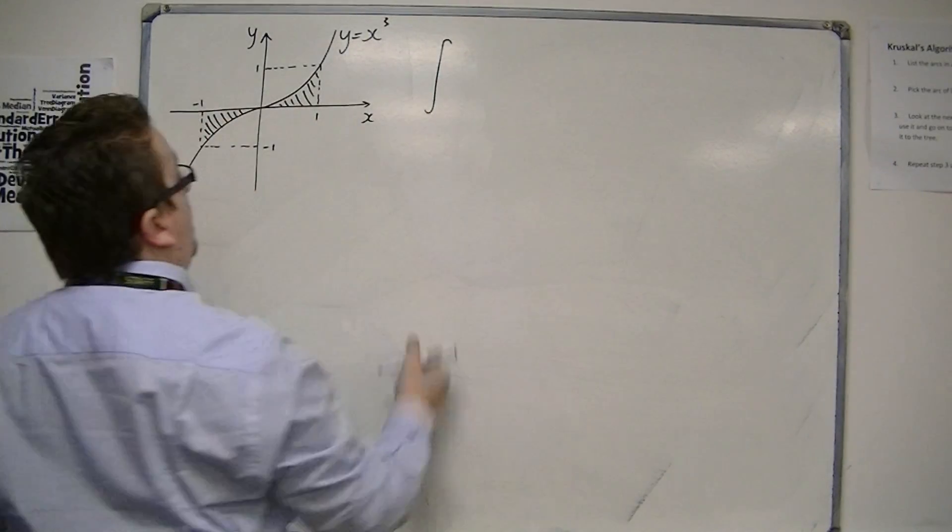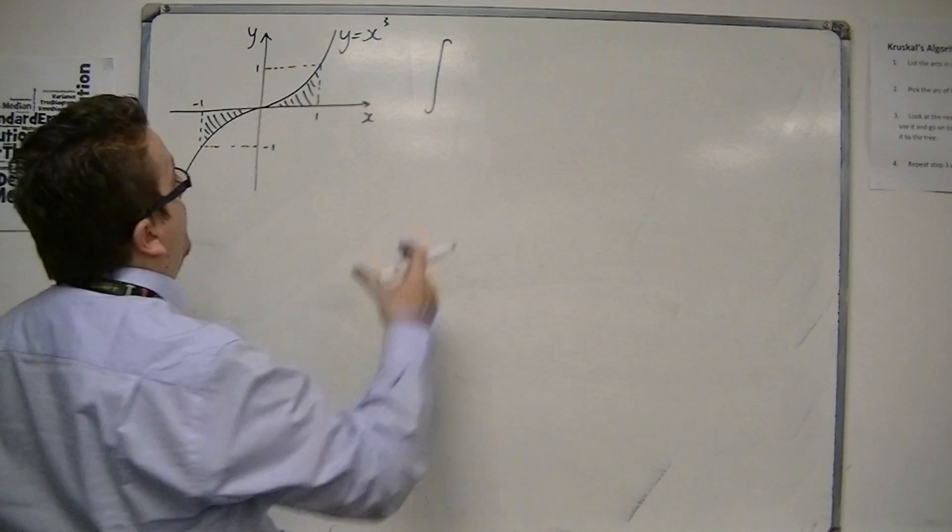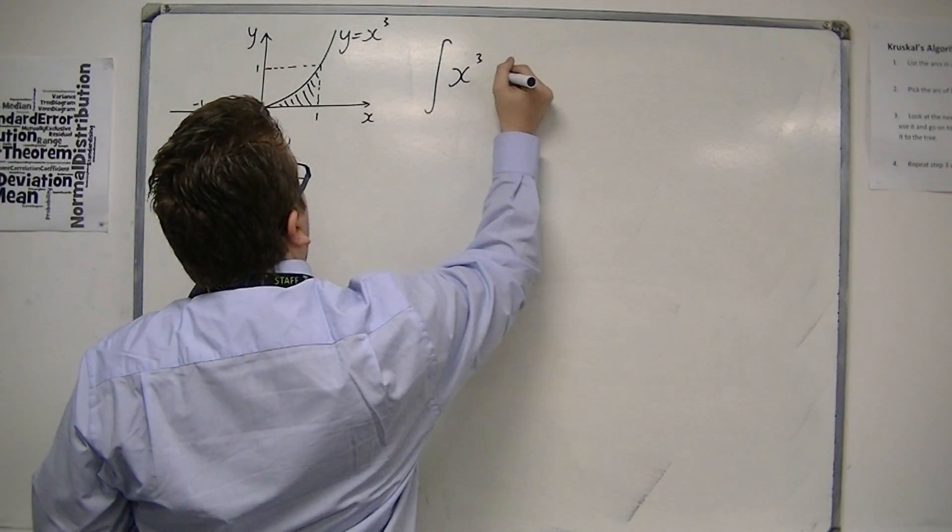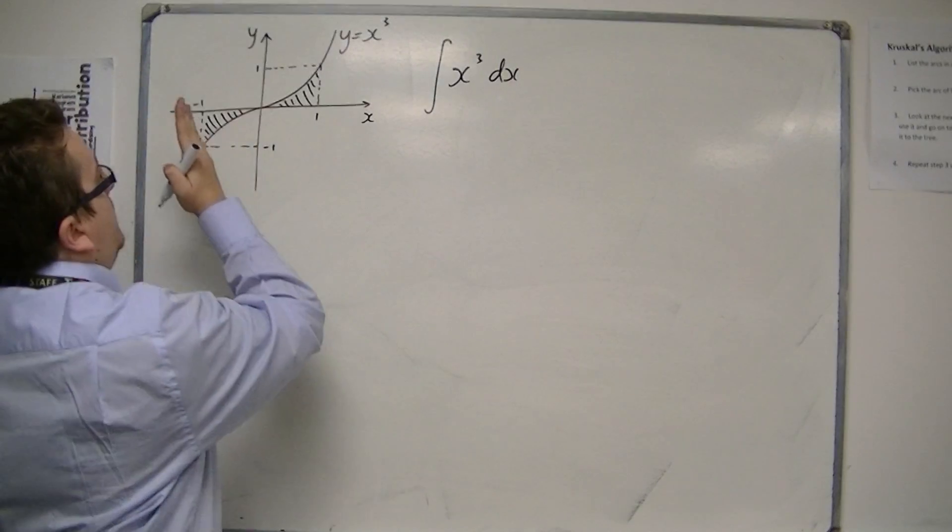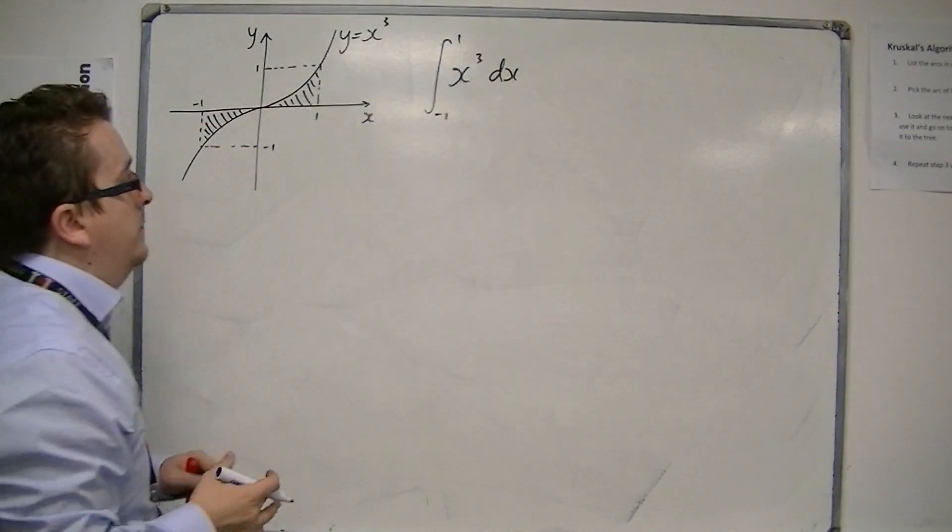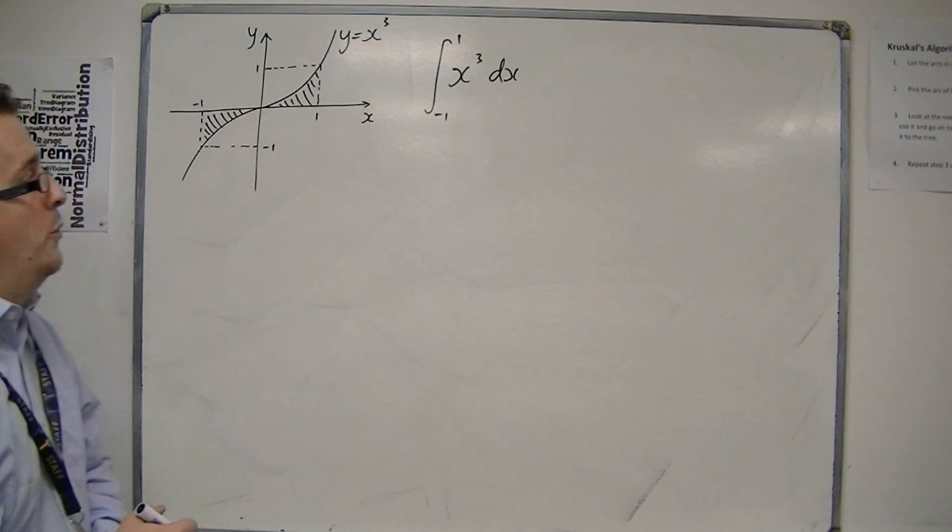So naturally, I would bring in the integration of x cubed dx with respect to x. And I'm going to integrate it between minus 1 and 1. Seems reasonable enough.